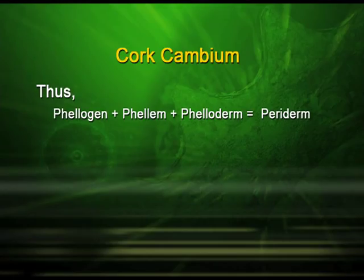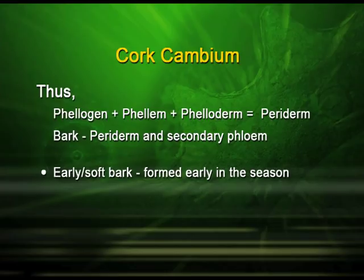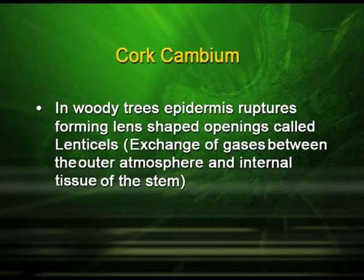Thus, phellogen plus phellum plus phelloderm equals periderm. The bark may be early or soft bark, which is formed early in the season, or late or hard bark when it is formed at the end of the season. In woody trees, the epidermis ruptures forming lens-shaped openings called lenticels, which are responsible for the exchange of gases between the outer atmosphere and the internal tissue of the stem.